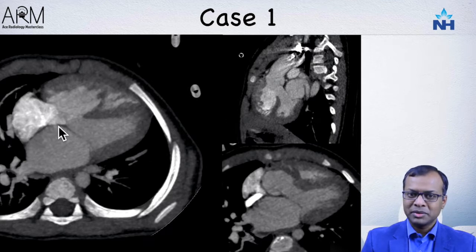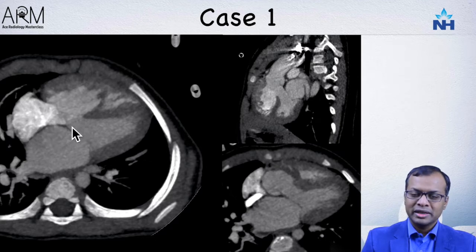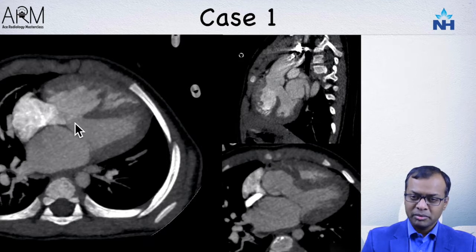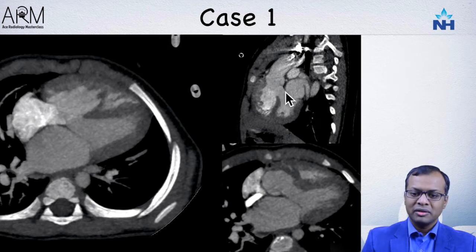The next important step is to look at the interatrial septum and interventricular septum. In this case there is a deficient interventricular septum — a VSD — with no obvious ASD. VSDs lower down are considered muscular VSDs, while those higher up tend to be membranous or perimembranous. Looking at the relationship of the aorta with the VSD, you can see the aorta is overriding the VSD, getting its blood from both the right and left ventricles.